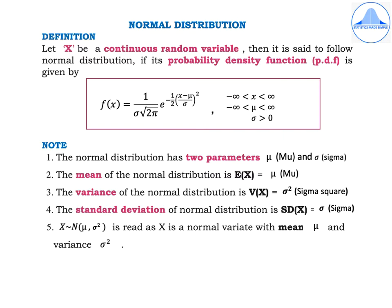The normal distribution has two parameters: mu and sigma, sometimes written as mu and sigma square. The mean is E of x equal to mu, the variance is V of x equal to sigma square, and the standard deviation is root of sigma square, which is sigma. The notation x follows N(mu, sigma square) is read as x is a normal variate with mean mu and variance sigma square.